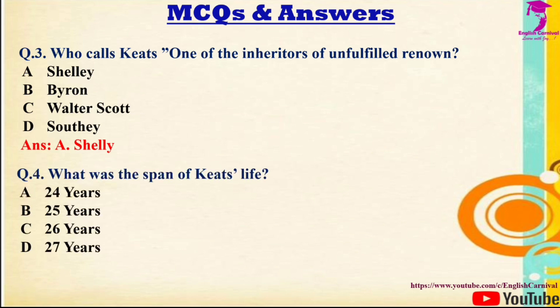Question 4: What was the lifespan of John Keats? Options: A) 24 years, B) 25 years, C) 26 years, D) 27 years. Correct answer is C — 26 years.